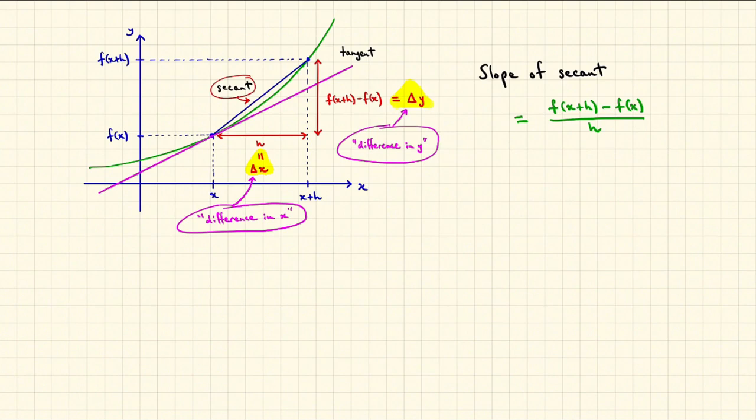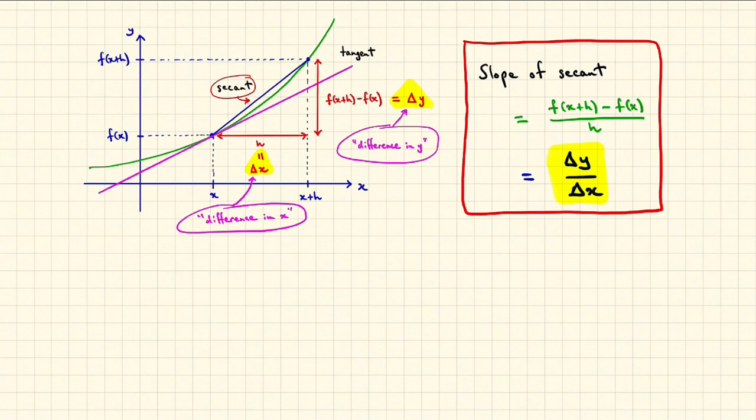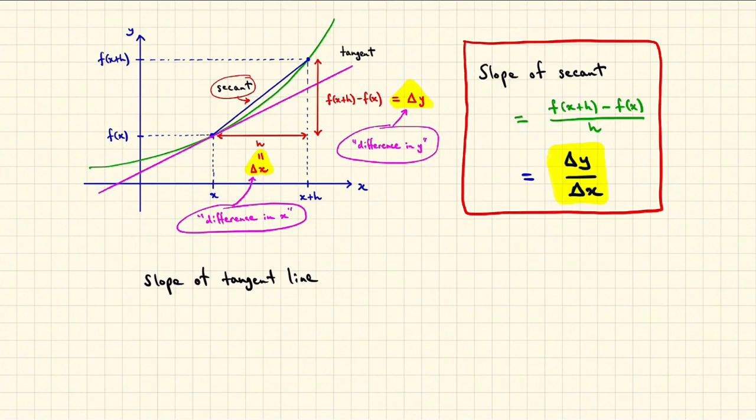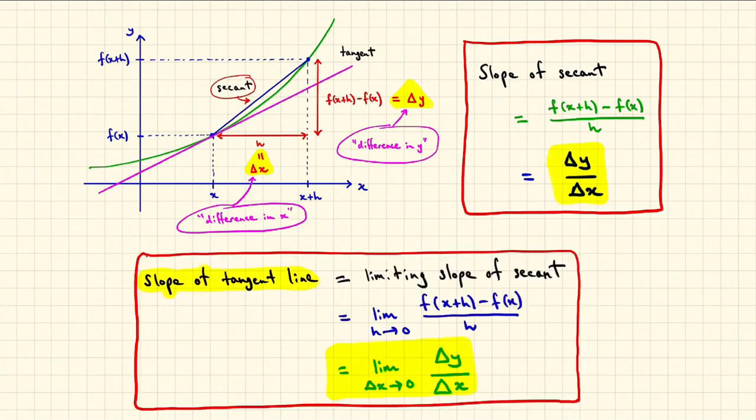The slope of the secant that we recognized before as f of x plus h minus f of x over h now becomes, using this notation, delta y over delta x, the change in y over the change in x. The slope of the tangent line that we recognized as the limiting slope of the secant can now be expressed using this new notation as the limit as delta x goes to 0 of delta y divided by delta x.